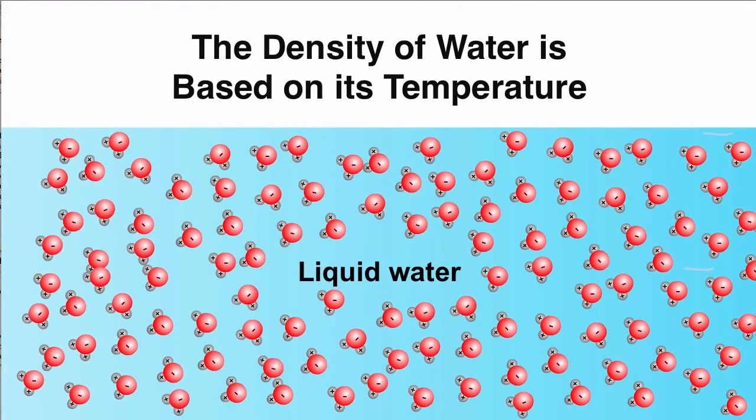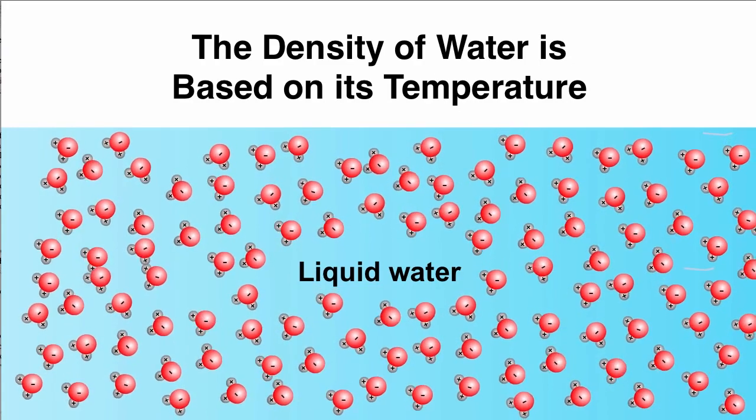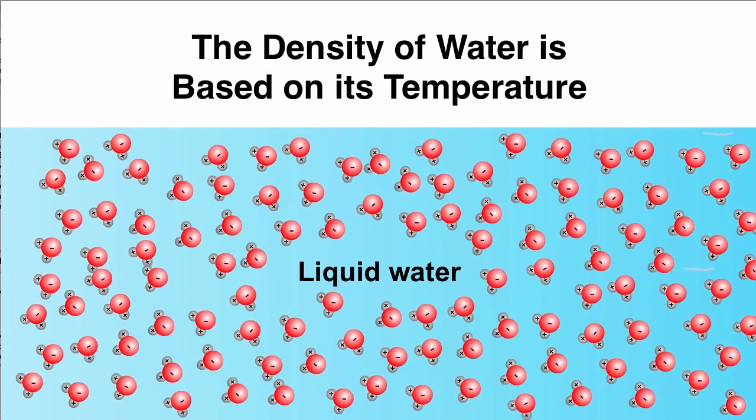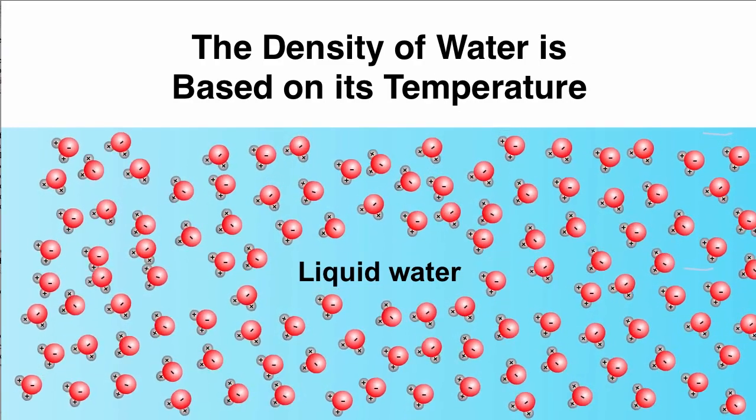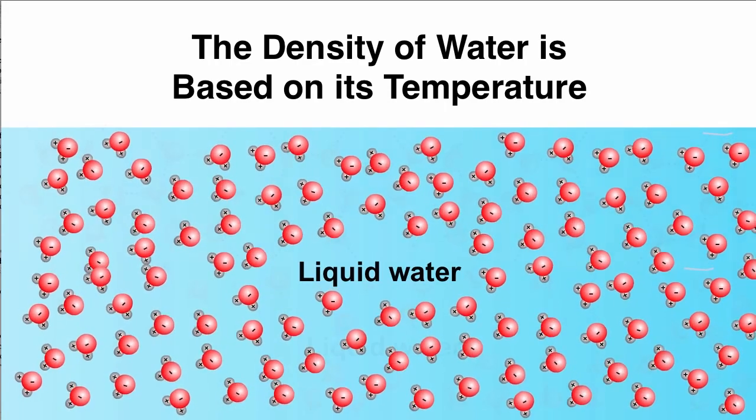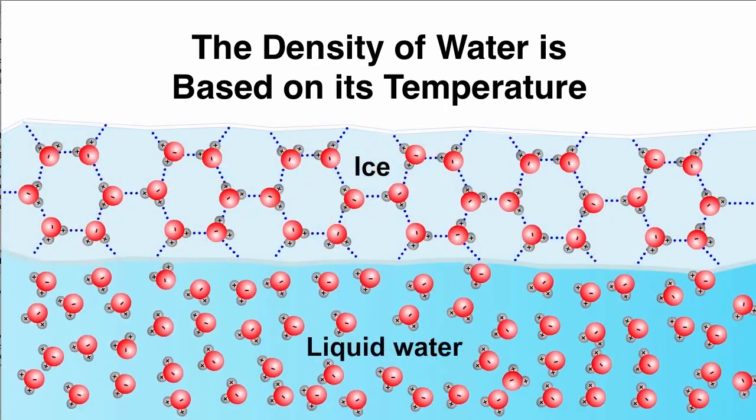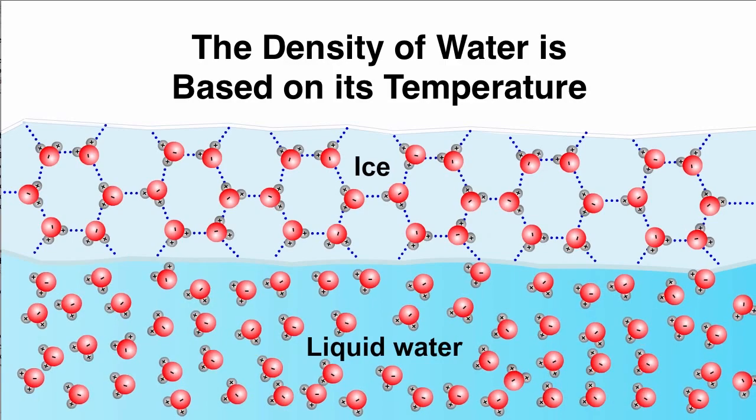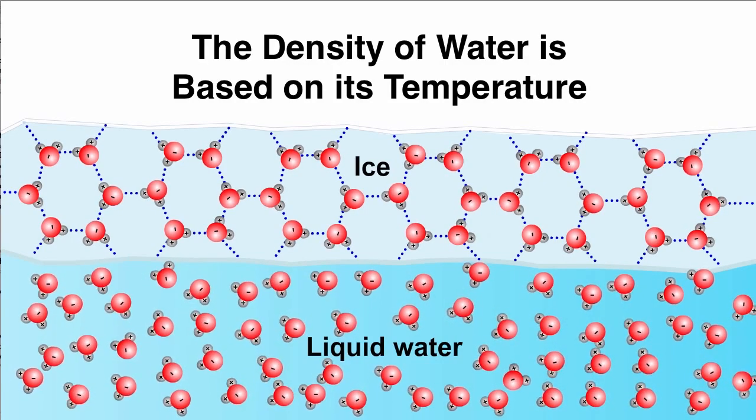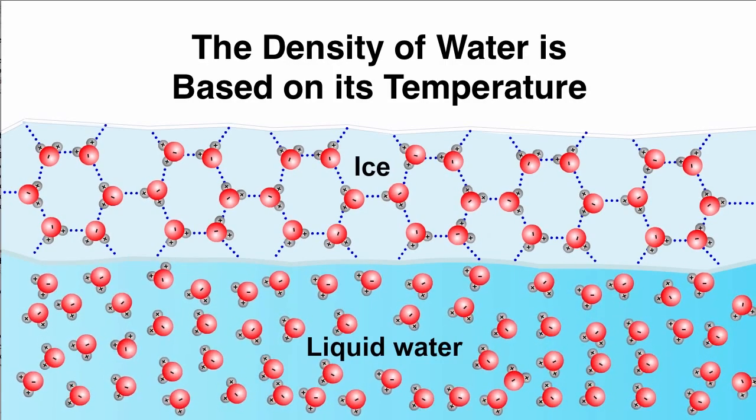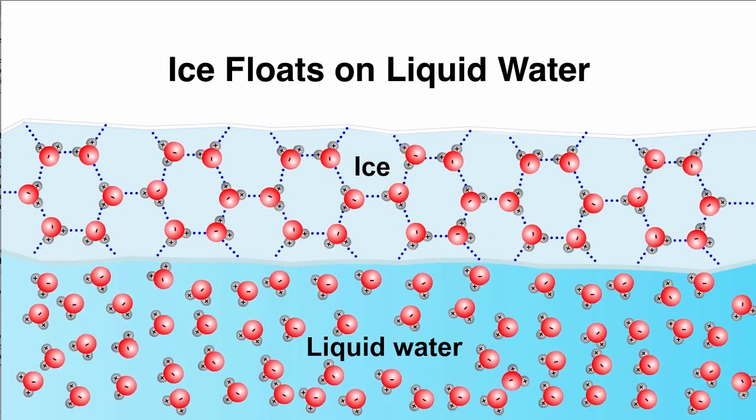And finally, the density of water is based on its temperature. However, unlike many other compounds which contract when they freeze, the configuration of the hydrogen bonds in water causes it to expand when it freezes. This expansion causes ice to have a lower density than liquid water, and therefore ice floats on liquid water.